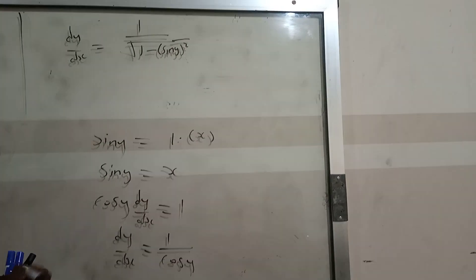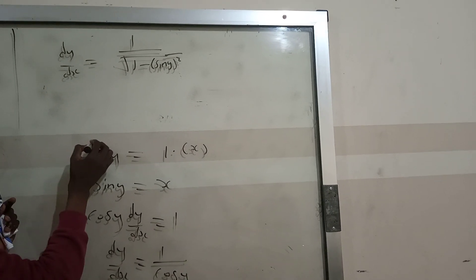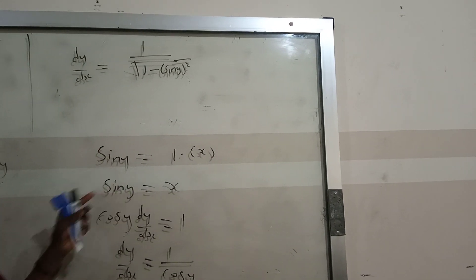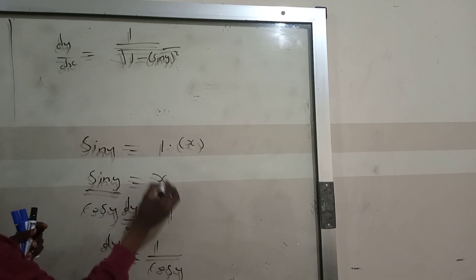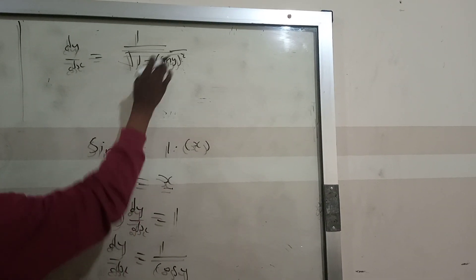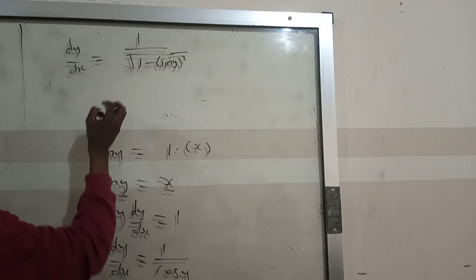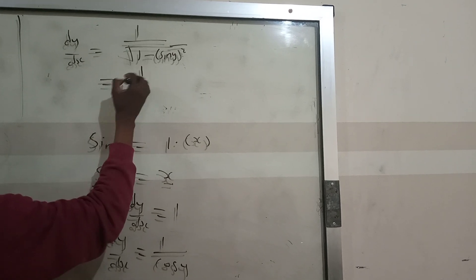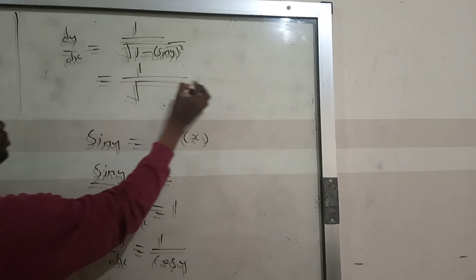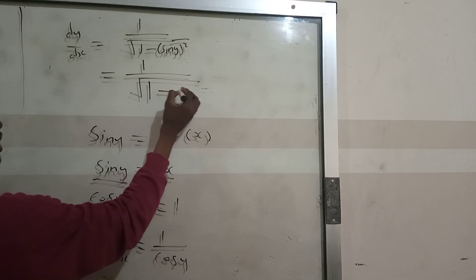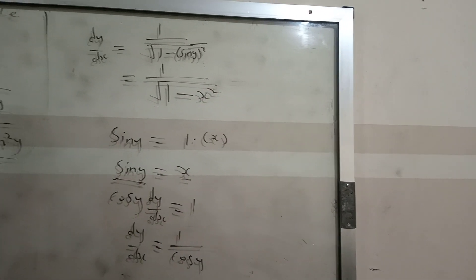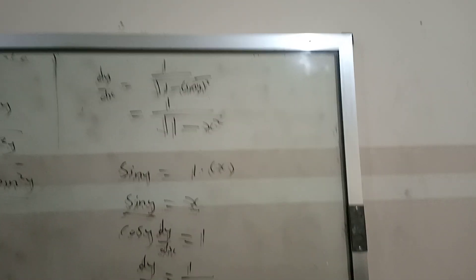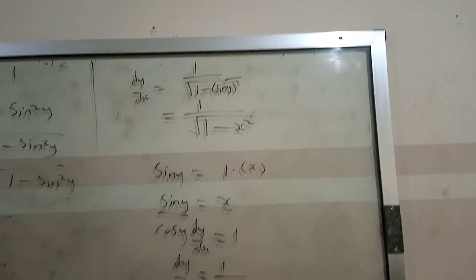From the previous step, sine y equals x. So substituting x in place of sine y, we get dy/dx equals 1 over the square root of 1 minus x squared. And that is the final answer for the derivative of sine inverse x. The next one is cos inverse, and it follows the same procedure.